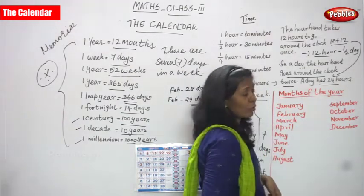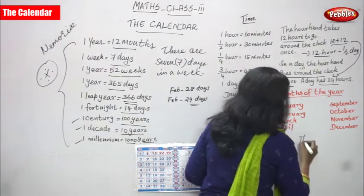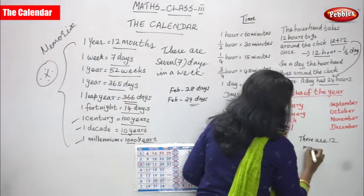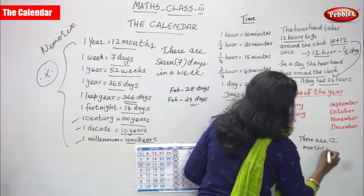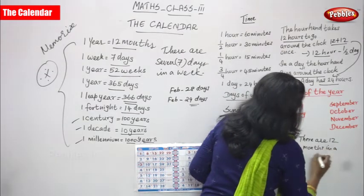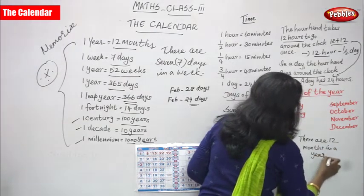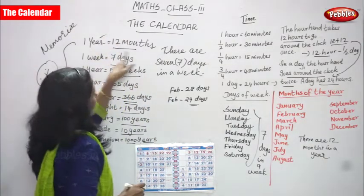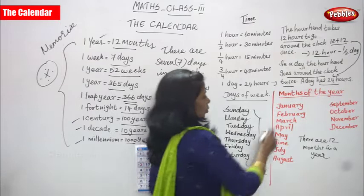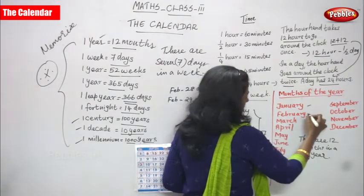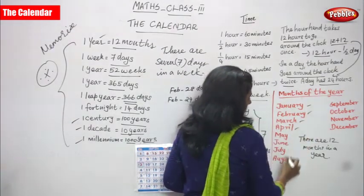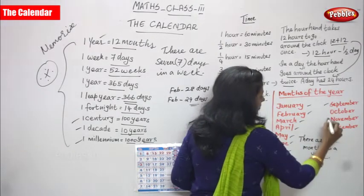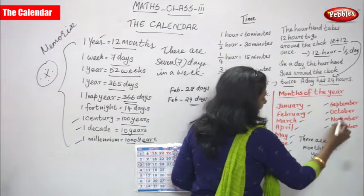Months of the year — how many months are in a year? There are 12 months in a year. One year is equal to 12 months. The months are: January, February, March, April, May, June, July, August, September, October, November, and December. So how many months? 12 months.